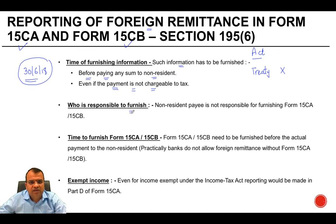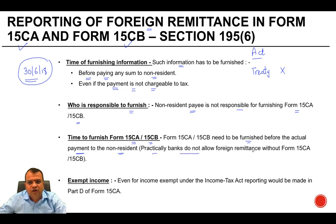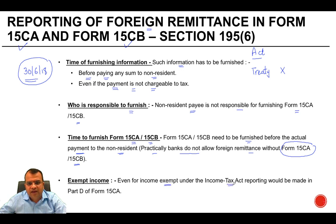Who is responsible to furnish this — the payer or the non-resident payee? It is the payer who has to furnish it; the non-resident payee is not responsible for furnishing Form 15 CA or CB. The forms must be furnished before the actual payment to the non-resident. As a practical measure, banks do not allow foreign remittance without Form 15 CA or 15 CB. Even for income exempt under the Income Tax Act, reporting would be made in Part D of Form 15 CA.